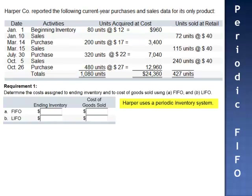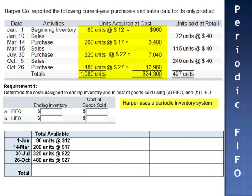Remember, a periodic inventory system calculates cost of goods sold at the end of the period, disregarding the actual sale dates. We start with the total units available: 1,080 units and $24,360. Each unit and each dollar will be allocated to either cost of goods sold or ending inventory.